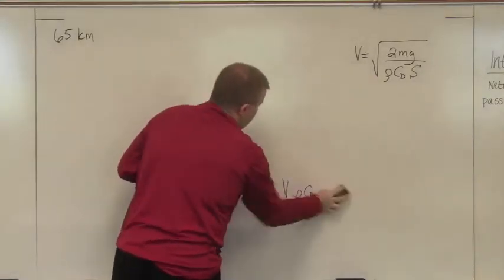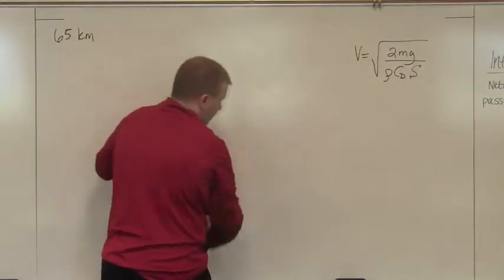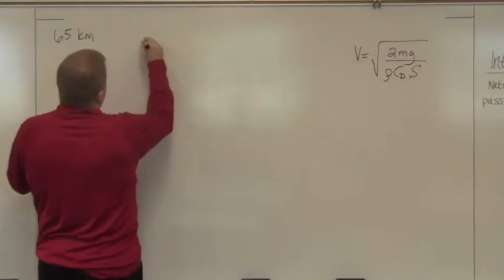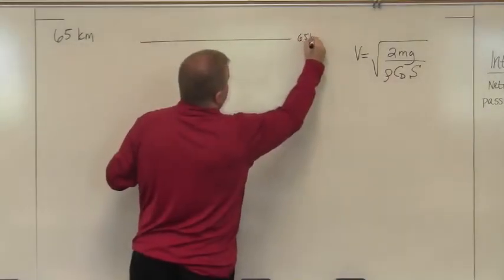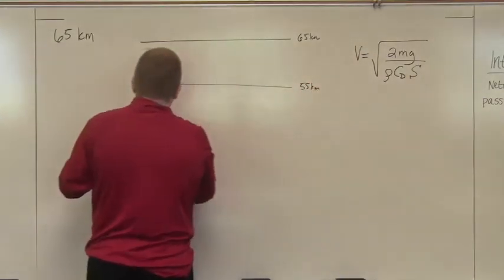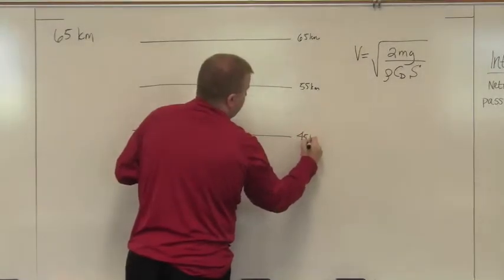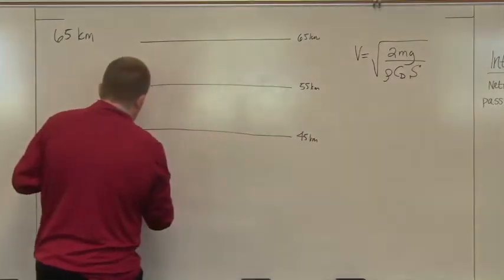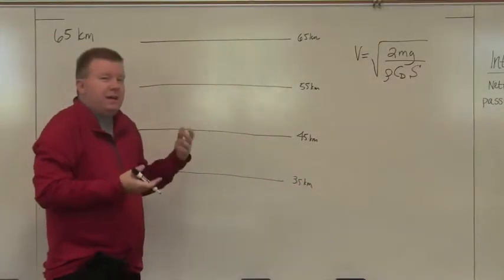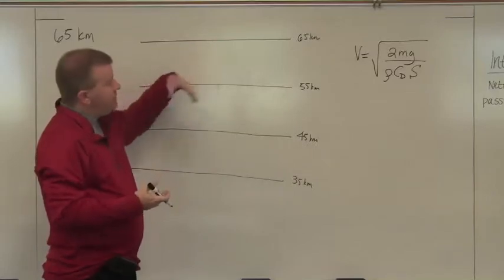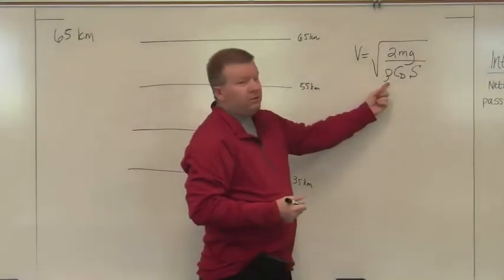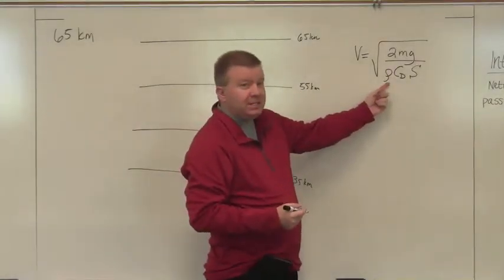So I'm going to write V again. V equals the square root of 2MG over rho C sub D S. That's what we can use to find this stuff. And from Matt's wonderful video, we talk about that below 65 kilometers, you've got to worry about this stuff. What we suggest you do is you take the atmosphere, say this is 65 kilometers, then we're going to say this is 55 kilometers. I would say chunk it in 10 kilometer increments.